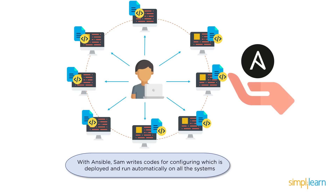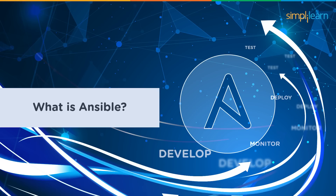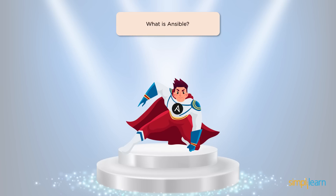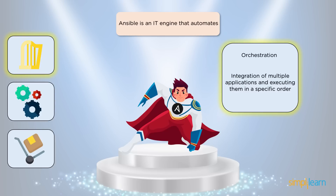Ansible is an IT engine that automates the following tasks. First we have orchestration. Orchestration basically means bringing together of multiple applications and ensuring an order in which these are executed. For example, if you consider a web page that you require to host, this web page stores all its values that it takes from the user into a database. So the first thing you must do is ensure that the system has a database manager, and only then do you host your web page. This kind of order is very crucial to ensure that things work right.